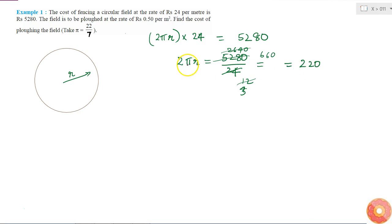This is the value of 2πr. So if I take π is equal to 22 by 7, then I will get 2 into 22 by 7 into r is equal to 220. Or r will be equal to 220 into 7 divided by 2 into 22, which is equal to 35 meters. This is the radius of the field.